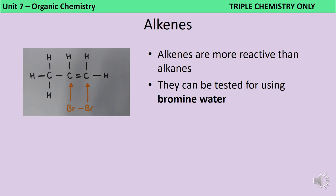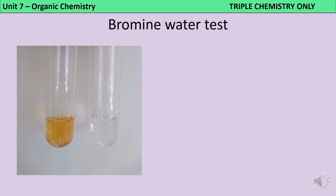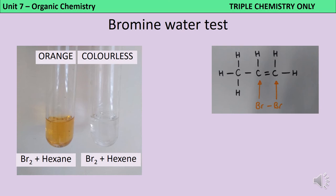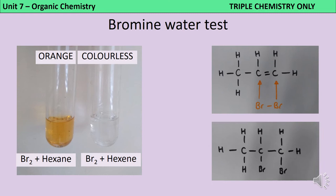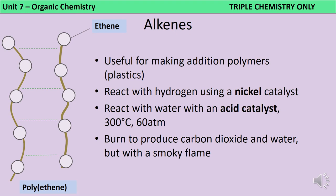Alkenes are more reactive than alkanes and we can differentiate between the two using a reagent called bromine water. Bromine water undergoes a colour change in the presence of any unsaturated molecule. Before it reacts, bromine water is a transparent orange liquid, and since it doesn't react with alkanes it remains orange and transparent if mixed with an alkane. However, as soon as it interacts with a molecule that contains a double or triple bond, bromine water turns colourless. It's really important that you say colourless and not clear — clear means transparent, and the orange bromine water is still transparent, so you won't get a mark in the exam if you say it turns clear.